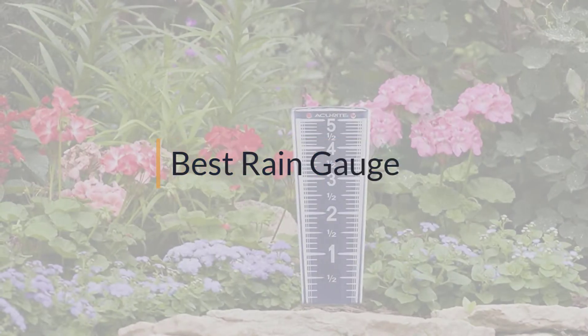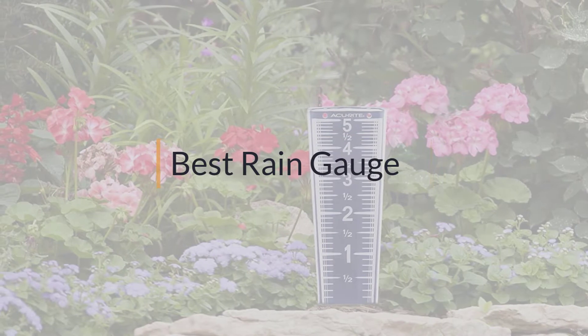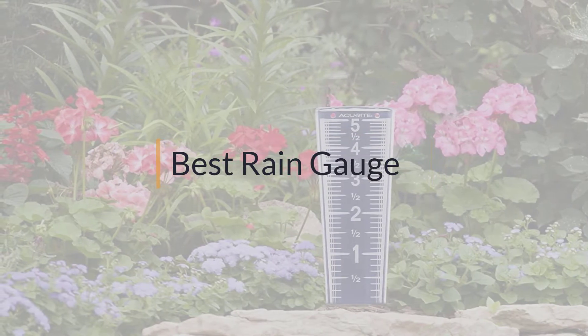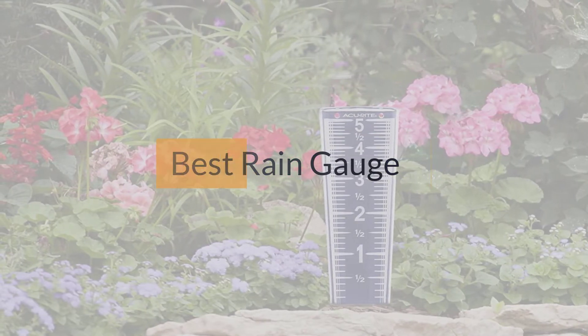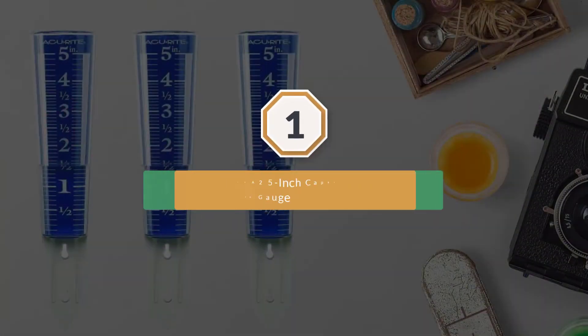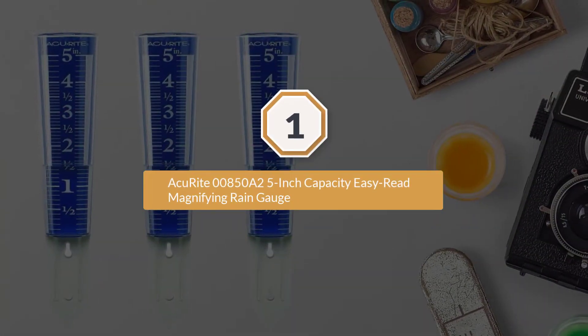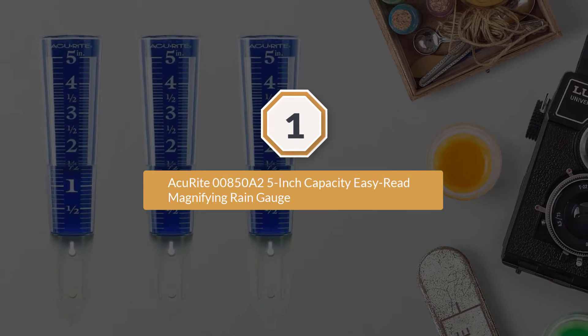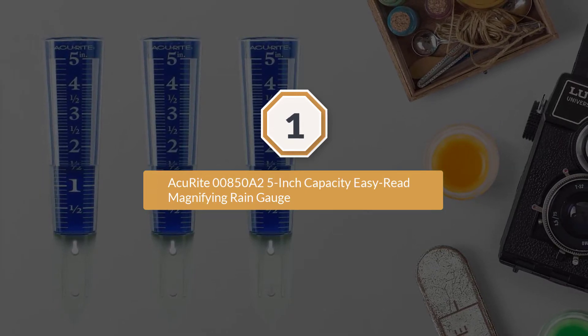If you are looking for the best rain gauge, here is a collection you have got to see. Let's get started. Number one, most popular: AccuRite 00850A2, 5-inch capacity easy read magnifying rain gauge.